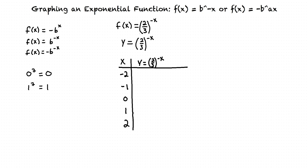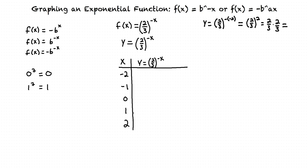Our first x value is negative 2, so we'll substitute this into our function and find our y value. We have 2 thirds to the negative negative 2, but two negative signs make a positive, so this equals 2 thirds squared, which equals 2 thirds times 2 thirds, and this equals 4 over 9. We have now found the y value associated with x equals negative 2.